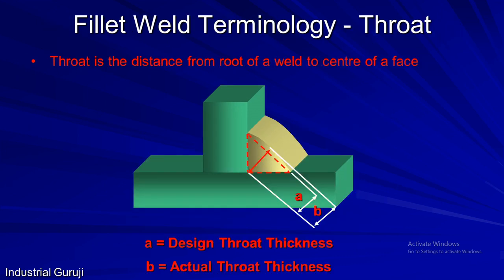The second dimension in fillet weld is throat thickness. Throat is defined as the distance from the root of a weld to the center of a face. Here two throat thicknesses are shown. A stands for design throat thickness — it is the minimum dimension used for design purpose, also called effective throat thickness. B stands for actual throat thickness, which is the actual dimension we get while welding. Throat is also an important dimension as in European standards it is referred to as fillet size on a drawing.